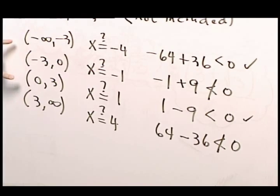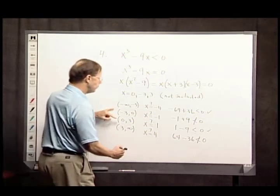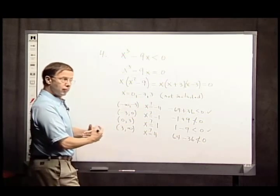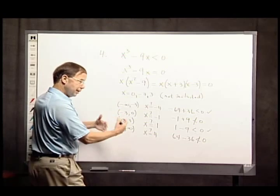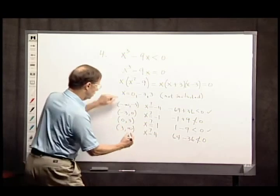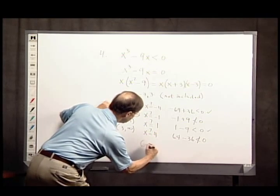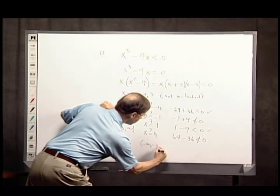Summarizing everything, I have two intervals that are perfectly good. In set notation, when we have collections of solutions, and we want to put them all together in one big solution, we form a union. So I have as the solution to this problem, negative infinity to negative 3, union 0 to 3.